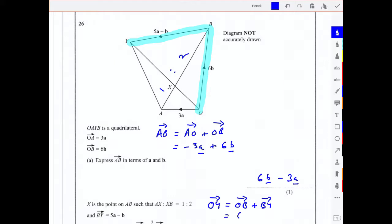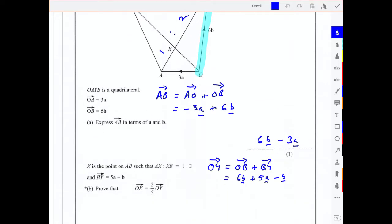OB is simply 6b, and BY is 5a minus b. So what we've got there is 6b minus b is 5b, so we've got 5b plus 5a, which I could write as 5 lots of a plus b or b plus a.